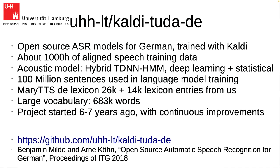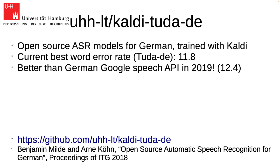You can also extend the lexicon and add your custom vocabulary, which is nice to have for subtitling lectures. As for quality, our current best word error rate — measured including lower and uppercase errors — is 11.8%, which is actually better than the German Google Speech API result of 12.4% recorded by a colleague from Stuttgart in 2019. Lower is better for word error rates.